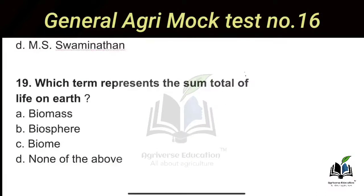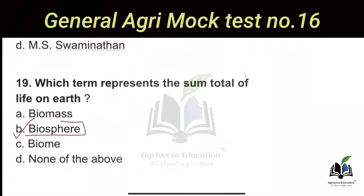The next question: Which term represents the sum total of life on earth? Options are biomass, biosphere, and biome. The right answer is Option B — biosphere. So biosphere is the sum total of life on earth.